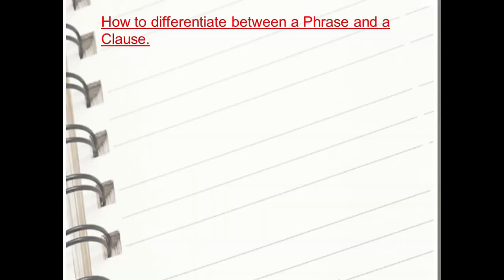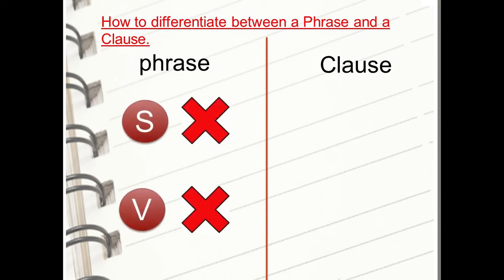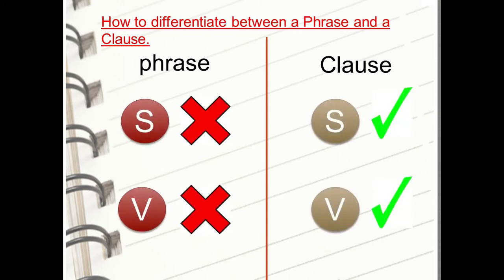Good morning, guys! Hope you're all doing well. So last week we finished the phrases, and this week we're going to start with the clauses. Who remembers what a phrase is? A phrase is a part of a sentence that does not have a subject and a verb. For example, 'on the tree' is a prepositional phrase — you have the preposition 'on' and the noun 'tree', but there is no subject and verb.